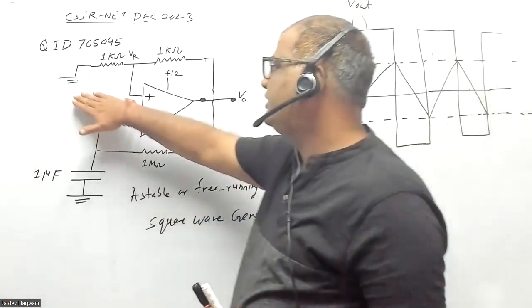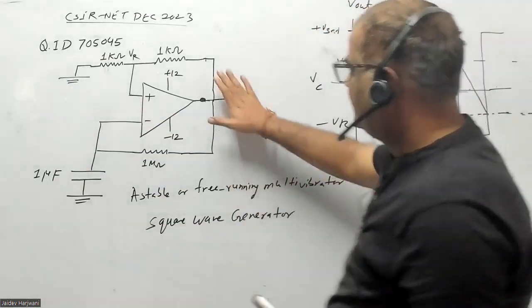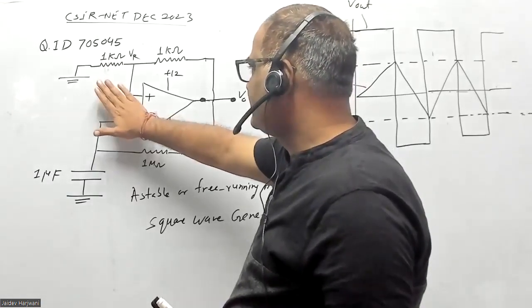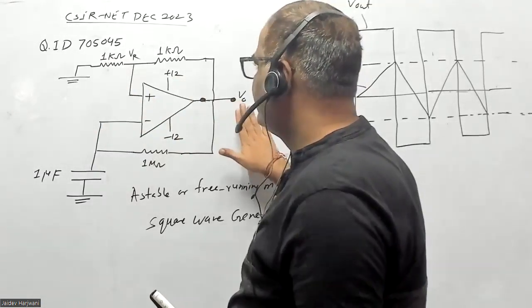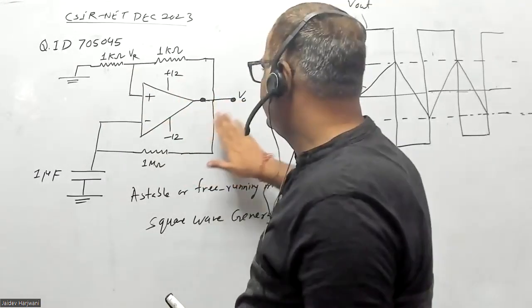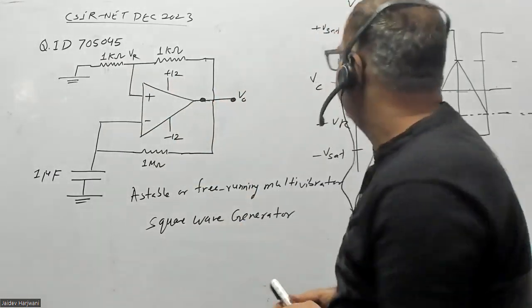Without any input sine wave or input signal, as you can see here you have a positive feedback. That means this is a comparator circuit; its output can go only to plus V saturation to minus V saturation. It can go only up to plus 12 to minus 12.